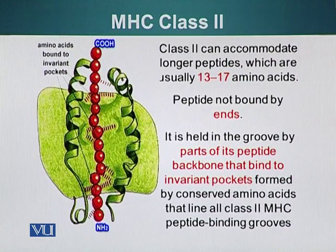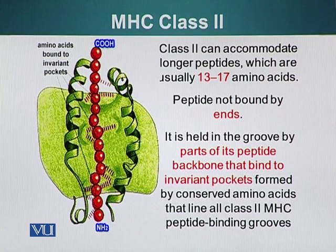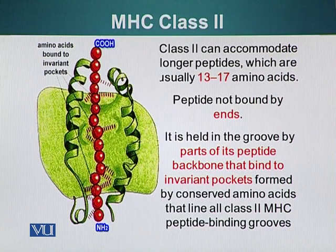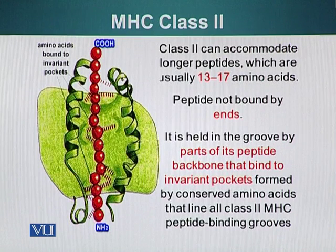MHC Class II molecules can accommodate longer peptides, usually 13 to 17 amino acids long. In this case, peptides are not bound at their ends, but are still held in the groove by invariant pockets on the surface of the MHC molecule, which recognize the conserved part of the amino acid backbone. Using this strategy, MHC Class II molecules can also bind a large variety of different polypeptides.